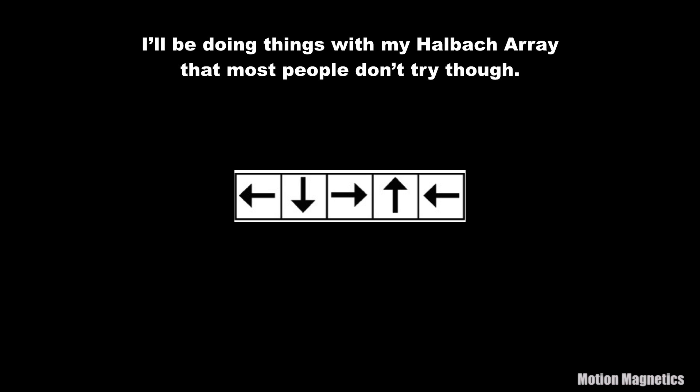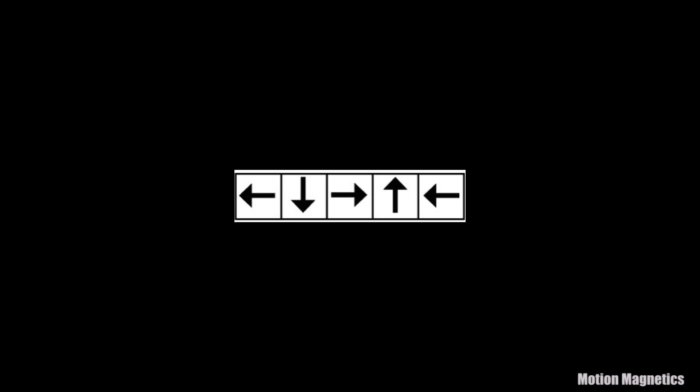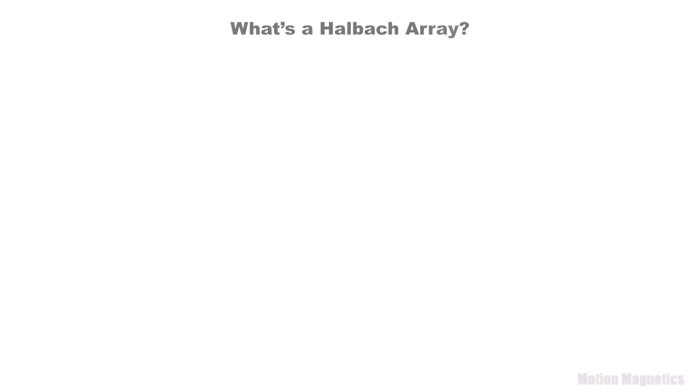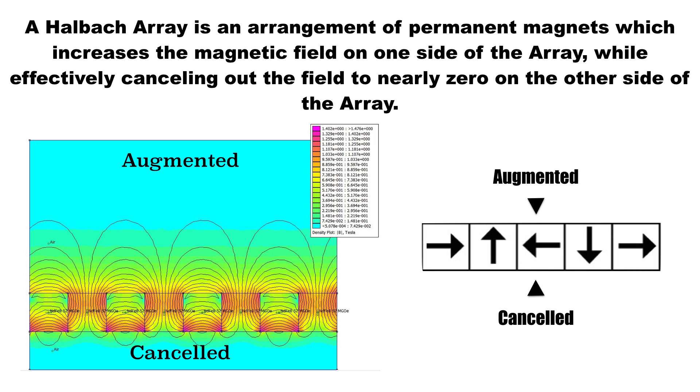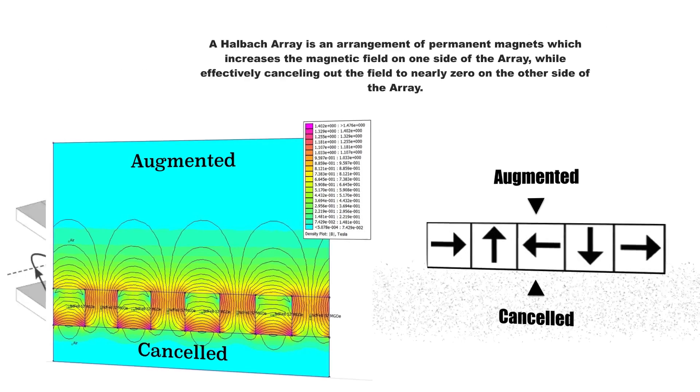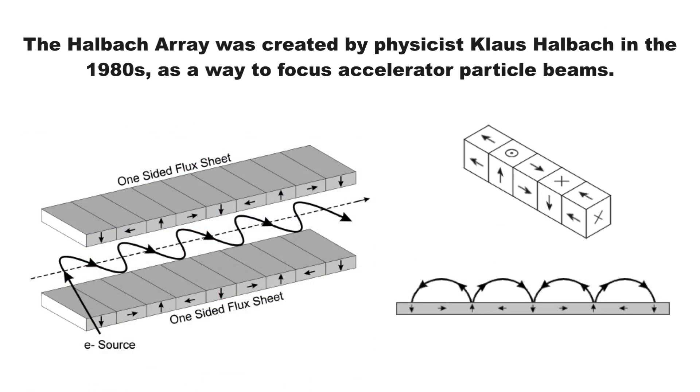I'll be doing things with my Halbach Array that most people don't try to. What is a Halbach Array? A Halbach Array is an arrangement of permanent magnets which increases the magnetic field on one side of the array while effectively canceling out the field to nearly zero on the other side of the array.